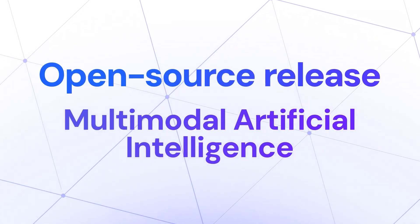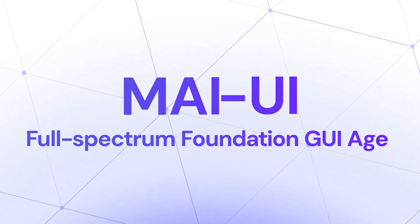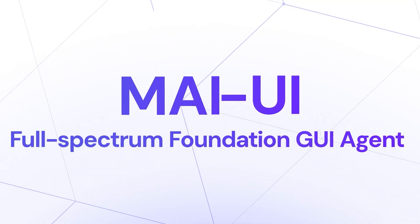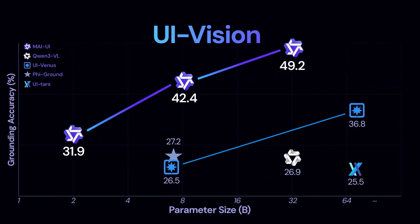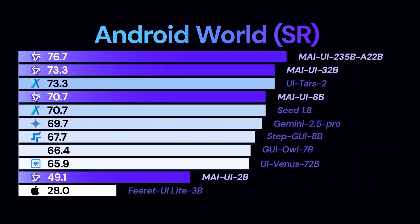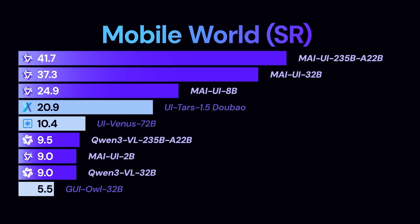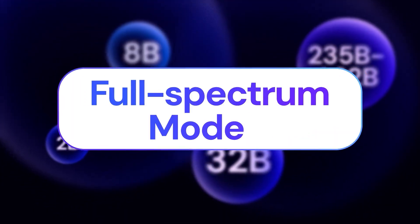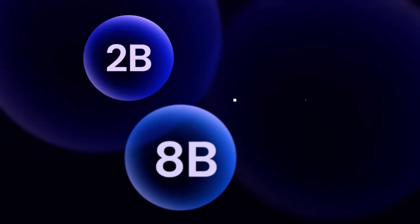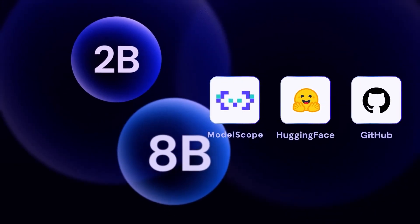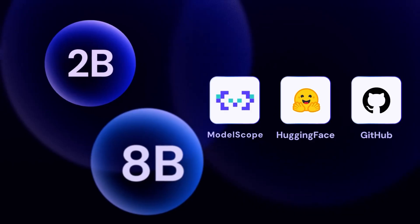Tony Lamp officially open-sources MyUI, a family of foundation GUI agents. It establishes new state-of-the-art performance across general GUI grounding and mobile GUI navigation benchmarks, surpassing both leading closed-source and open-source models. Spanning the full spectrum from efficient 2B to large-scale 72B models, they will now open-source the 2B and 8B variants, bringing certain-level GUI capabilities directly to your pocket.